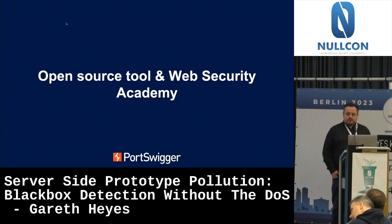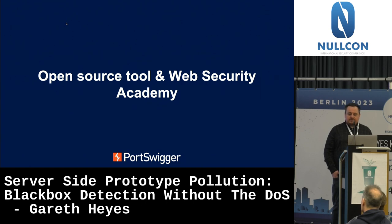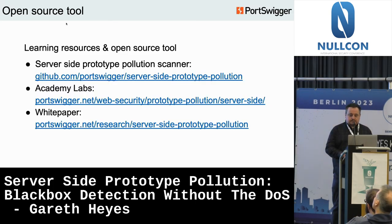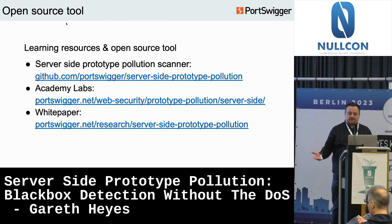I've released an open source tool called the server-side prototype pollution scanner that will detect prototype pollution using the techniques in this talk. You can also use it to discover server behavior with JavaScript properties in parameters or JSON, as demonstrated with native code leakage. The scanner works on both Pro and Community editions of Burp, source is on GitHub, and you can install it from the BApp Store. We've also created free Web Security Academy labs — including RCE labs — so you can practice and test for prototype pollution.